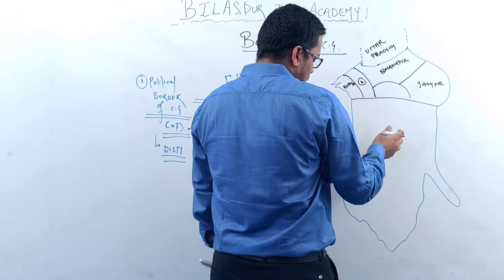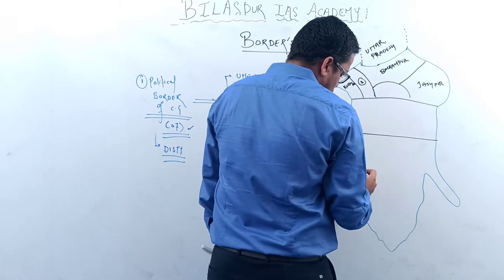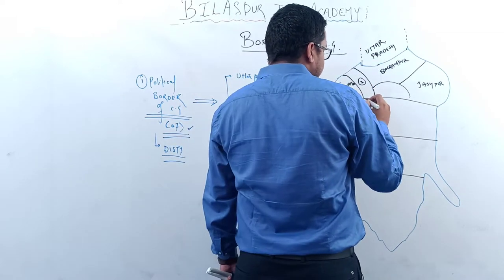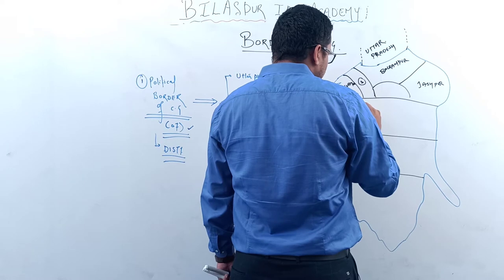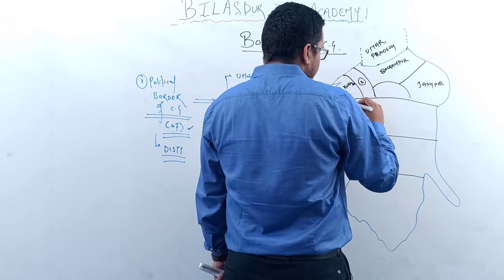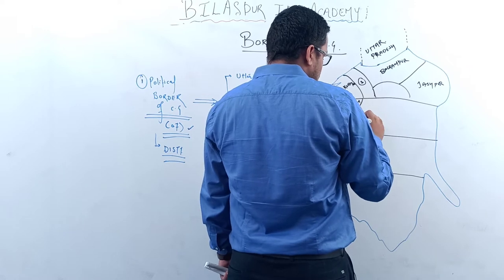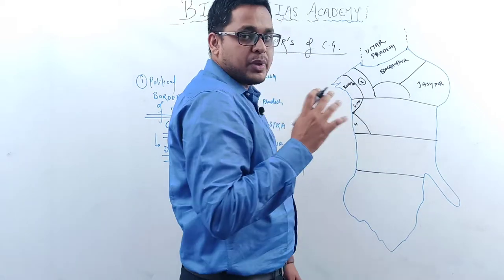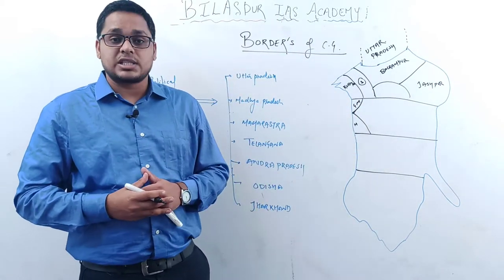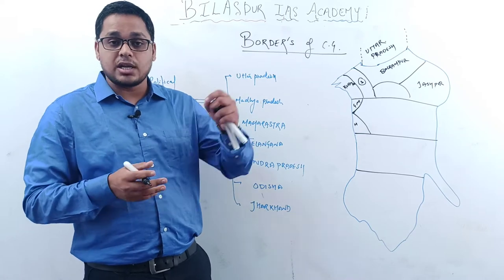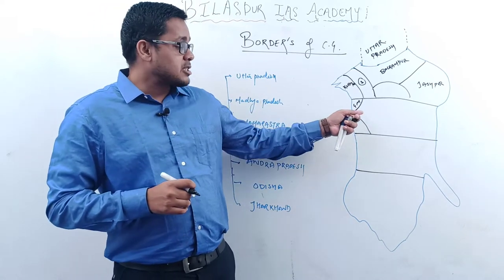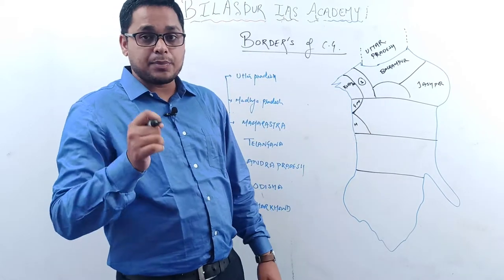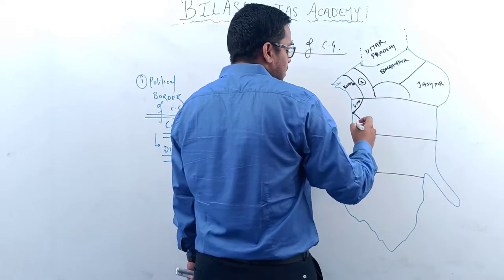Below the Sarbuja division, we have the Bilaspur division. In this division, GPM (Gorella-Pendra-Marwahi) and Mungeli make the border. Bilaspur itself does not make the border anymore — it has become a landlocked district of Chhattisgarh. So we have GPM and Mungeli making the border here.